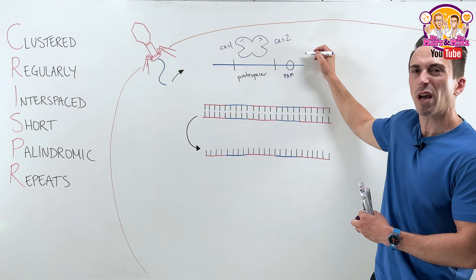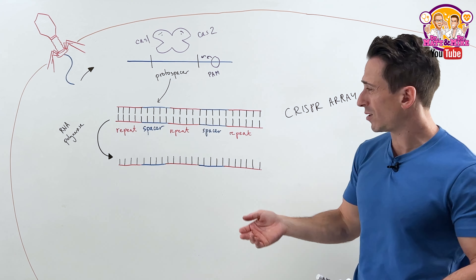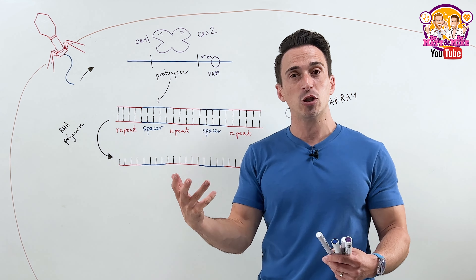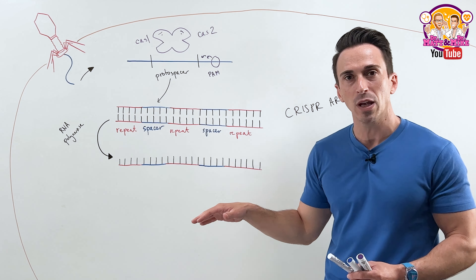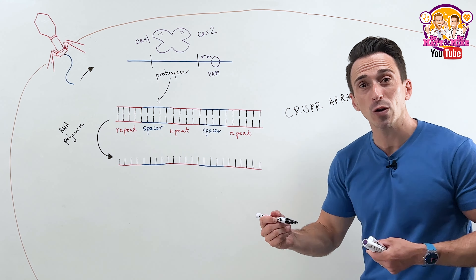This is double-stranded DNA — bacteria have circular double-stranded DNA. What we need is an RNA polymerase to come into action. RNA polymerases transcribe this DNA sequence into RNA. In humans we would usually transcribe this into messenger RNA, but that's not what's happening here. This is actually called pre-CRISPR RNA.